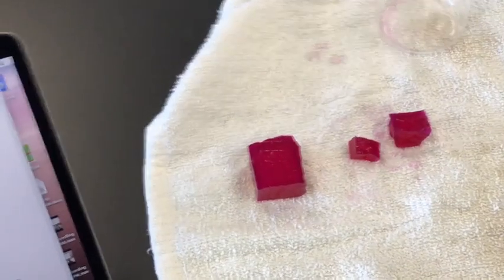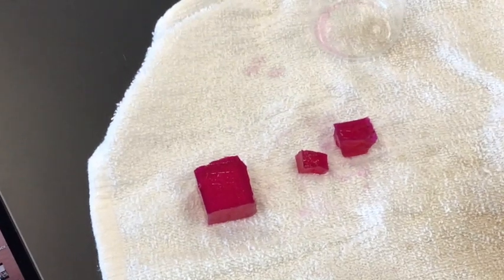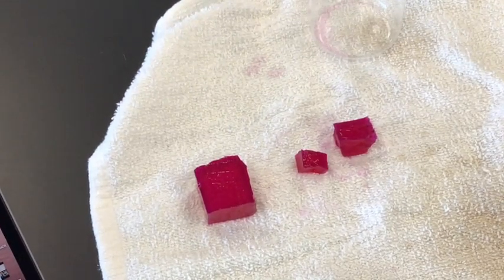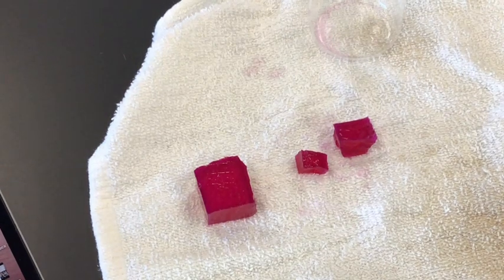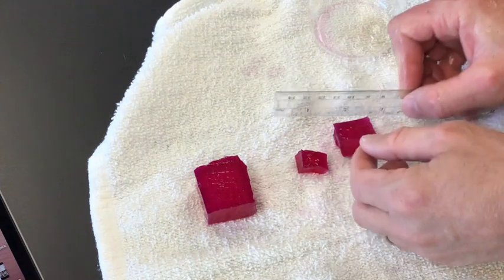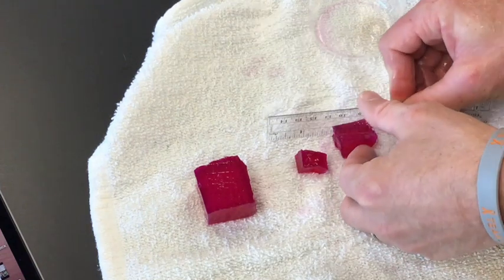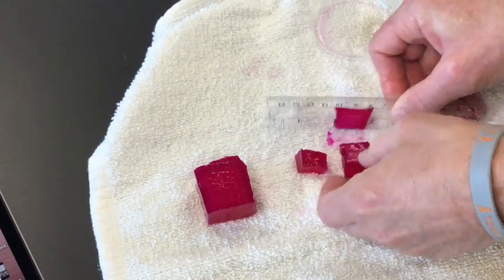All right, now the procedure says to rinse them very well, which I did, dispose the NaOH. Now cut them in half, so I'm just gonna use my ruler again and I'm going to cut each cube in half.